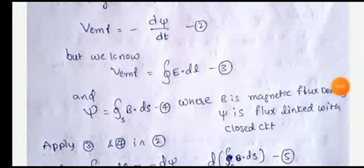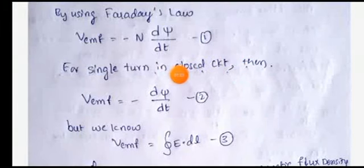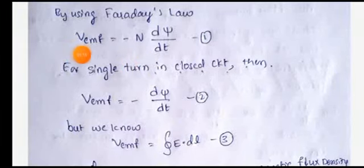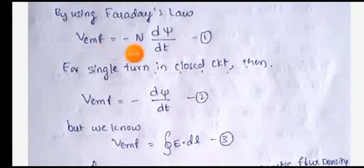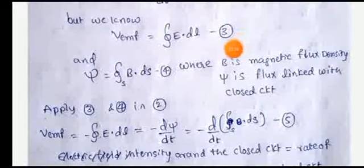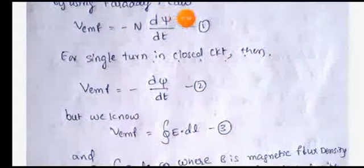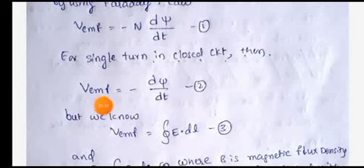Whenever a circuit is kept in a magnetic field, EMF is induced in the circuit. The induced voltage is EMF equal to minus N into d-phi by dt. Taking equations three and four and substituting into the second equation, EMF equals the closed line integral of E dot dl, substituting phi equal to the surface integral of B dot ds.